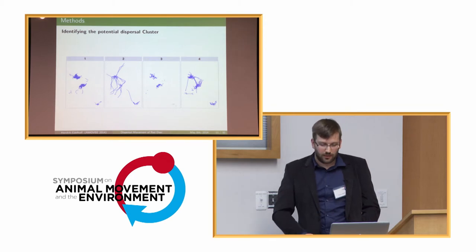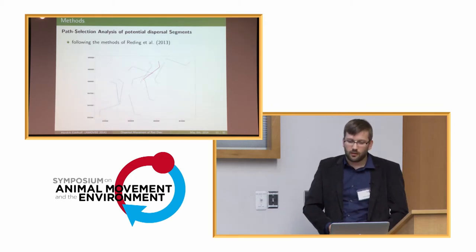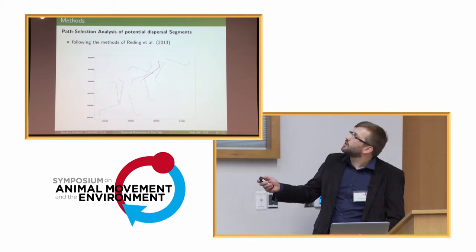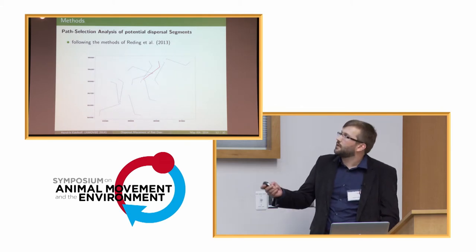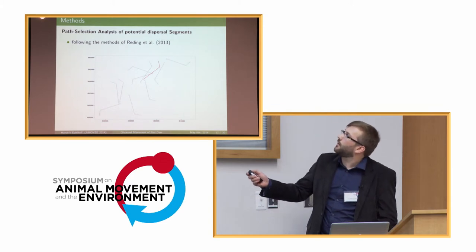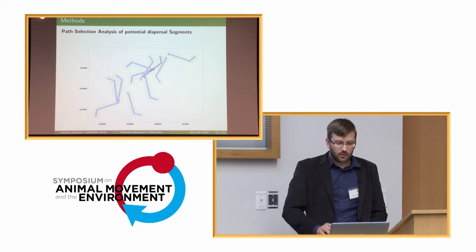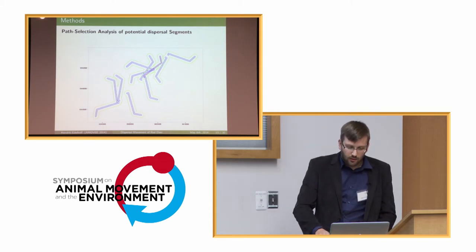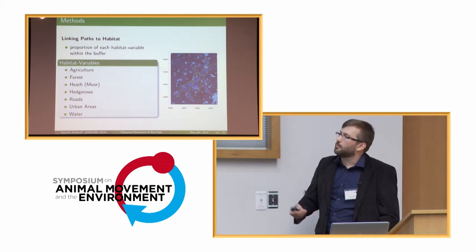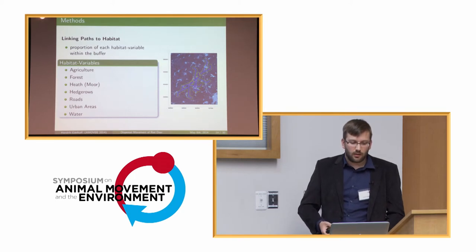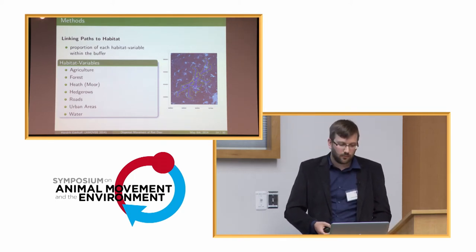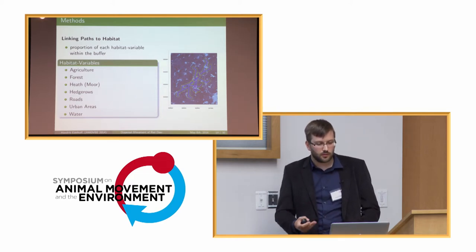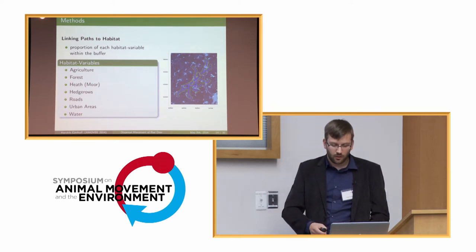Once those segments are identified, I apply a path selection analysis — as also used by Rieding and colleagues in a paper published last year. The original path segment, shown in red, is redistributed randomly 10 times within a radius of five kilometers while keeping the same path structure as the observed one. I then buffer each path — the blue buffer at 100 meters, the green at 500 meters — and measure the proportion of different habitat variables within those buffers: agricultural landscapes, forested areas, hedgerows, roads, urban areas, and water.